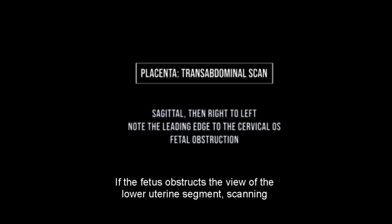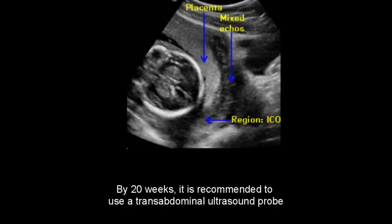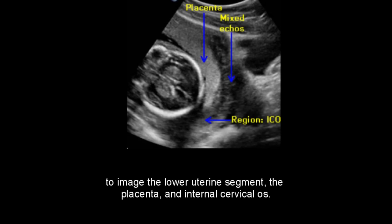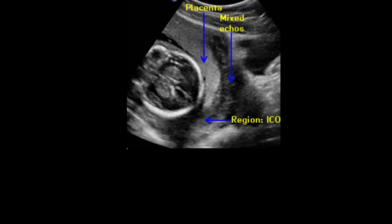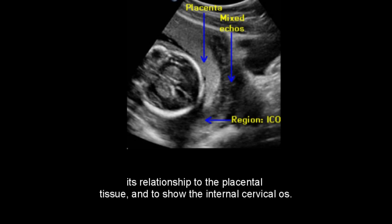If the fetus obstructs the view of the lower uterine segment, scanning laterally may be necessary. By 20 weeks, it is recommended to use a transabdominal ultrasound probe to image the lower uterine segment, the placenta, and internal cervical os. A sagittal view can be used to obtain images of the lower uterine segment and its relationship to the placental tissue, and to show the internal cervical os.